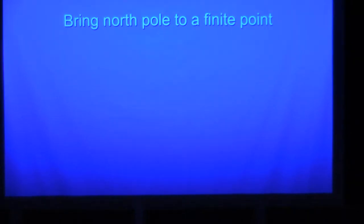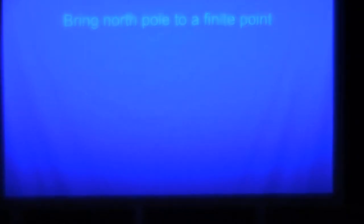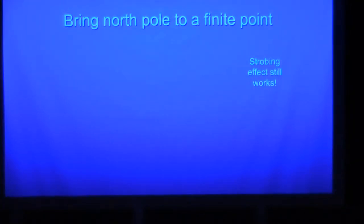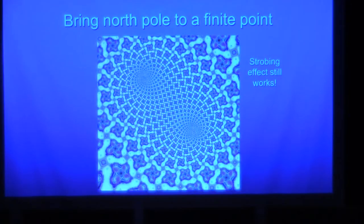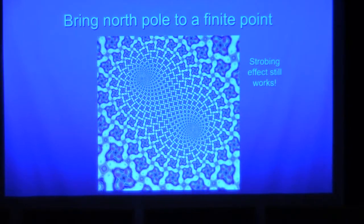You can also see when these Fibonacci spirals are happening, it's like they're coming out of the bottom of the Riemann sphere and into the top of the Riemann sphere. In the plane they're just going out, but if you bring the plane around to be the Riemann sphere, they're coming into the top. It's a simple Möbius transformation to bring the North Pole to a finite point, and the strobing effect still works, as I was delighted to find.